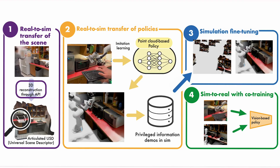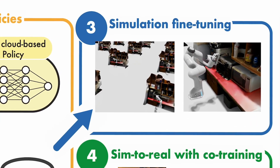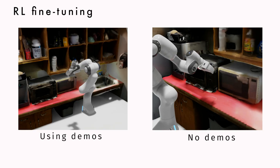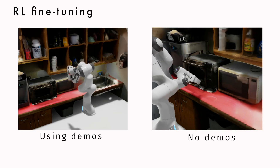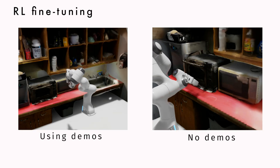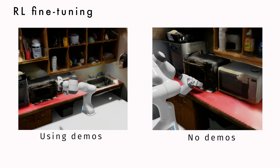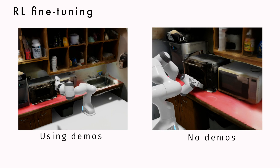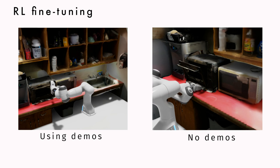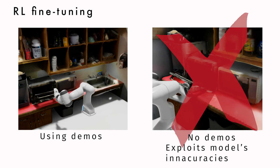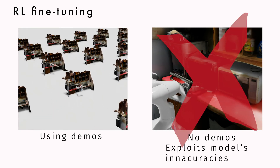Next, we do RL fine-tuning in simulation, starting from those demonstrations that we just collected with our vision-based policy, and then we also use a sparse reward. Using demonstrations is very important, since otherwise the policy will learn to exploit model inaccuracies to succeed. Hence, the demonstrations bias the policy towards a real-world transferable policy.